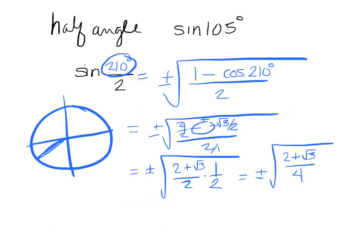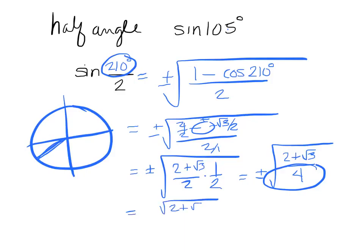We have the sine of 105 degrees using the half-angle identity. I need to figure out what angle, when divided by 2, gives 105 — that's 210. So I plug 210 in for cosine in the half-angle formula. Cosine of 210 is negative root 3 over 2 from the unit circle. Getting a common denominator, I make 1 into 2 over 2, giving (2 plus root 3) all over 2. Dividing by 2 gives a 4 in the denominator, so the square root of the bottom is 2. The final answer is root of (2 plus root 3) over 2, and it's positive because 105° is in the second quadrant where sine is positive.